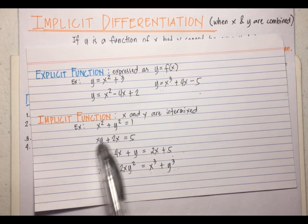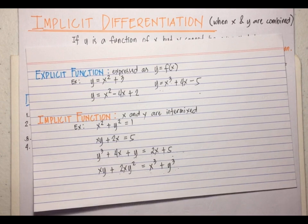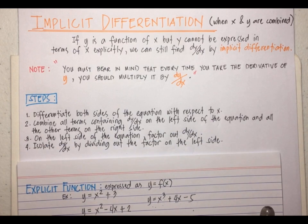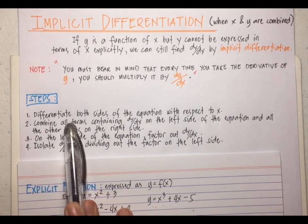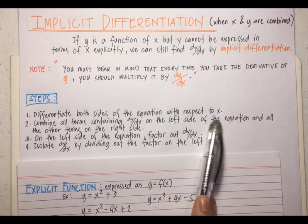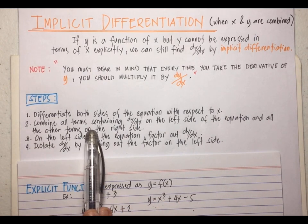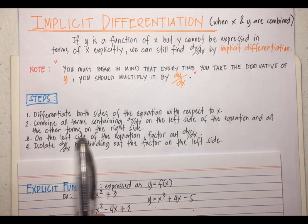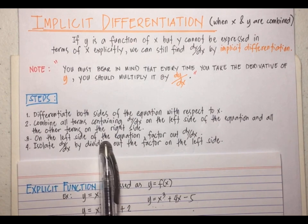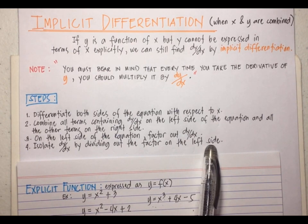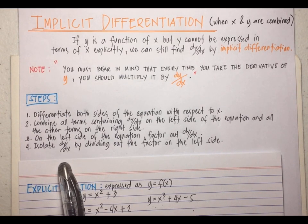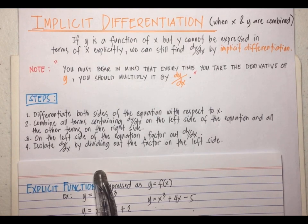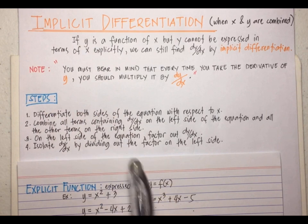These are the problems we're going to be dealing with. To do implicit differentiation, we follow some steps. Number one: differentiate both sides of the equation with respect to x. Second: combine all terms containing dy/dx on the left side of the equation and all other terms on the right side. Third: factor out dy/dx on the left side. And finally: isolate dy/dx by dividing out the factor on the left side.